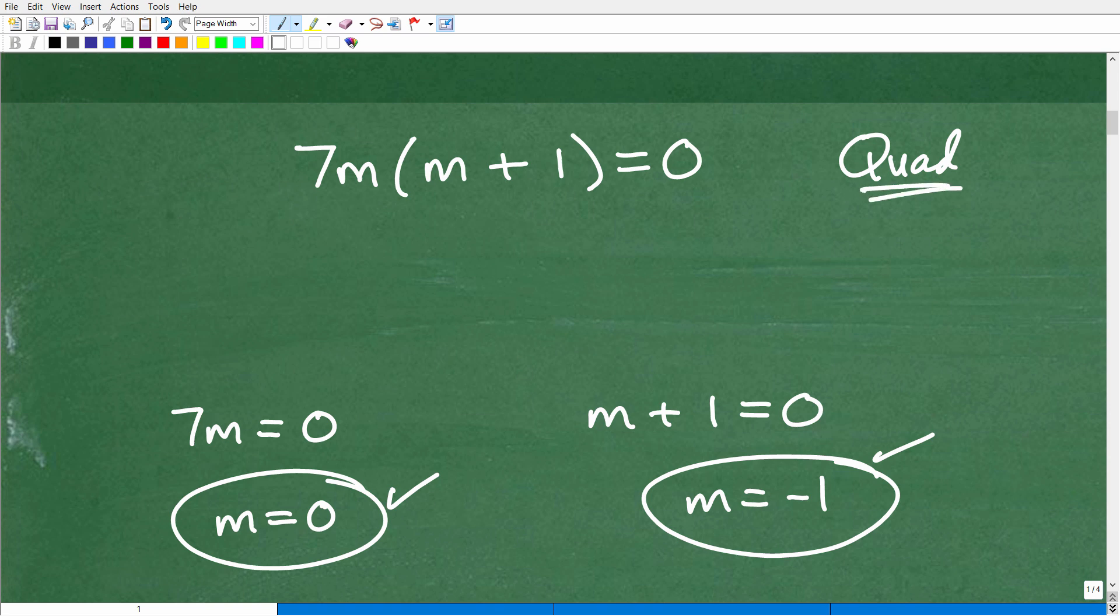So that is the answer. So if you said quadratic equation in here, M is equal to zero and M is equal to negative one, then I must give you an outstanding, happy face, A plus, 100% nice job.